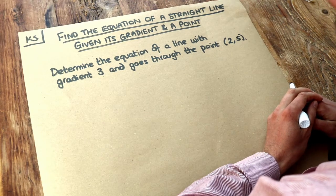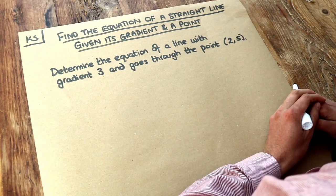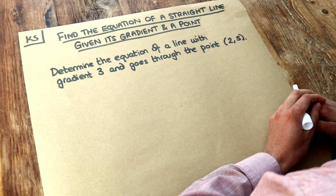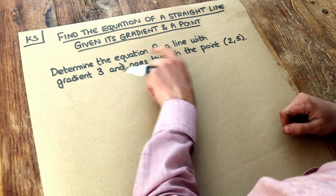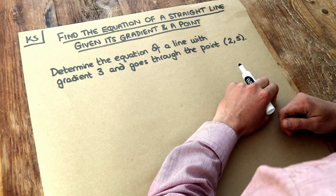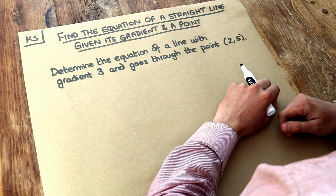Hello and welcome to Dr. Ross Mass's key skill video on finding the equation of a straight line given its gradient and a point. So we want to determine the equation of a line with gradient 3 and go through the point (2,5).